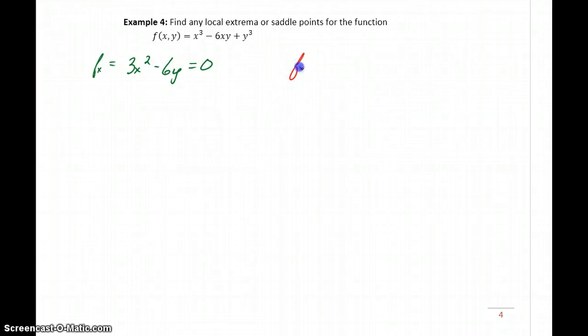And then we'll find f sub y, the first derivative with respect to y, which will give us negative 6x plus 3y squared, and again we'll set that equal to 0. Now what we have are two derivatives that we can't solve as quickly and easily as we did before, or two equations. So what we need to do is consider this first expression, the second expression, as a system of equations and somehow solve those to come up with results for x and y.